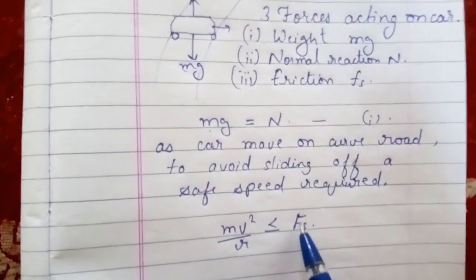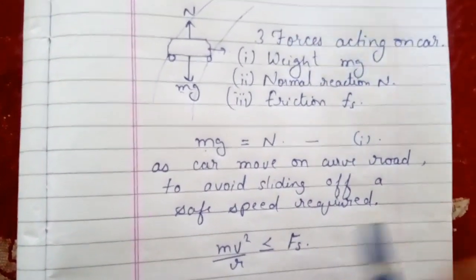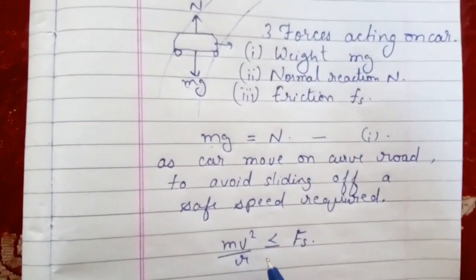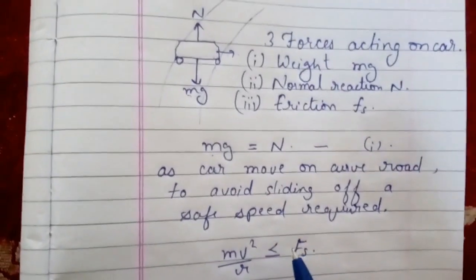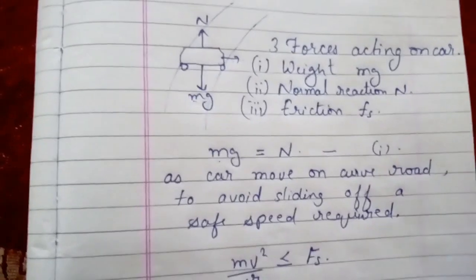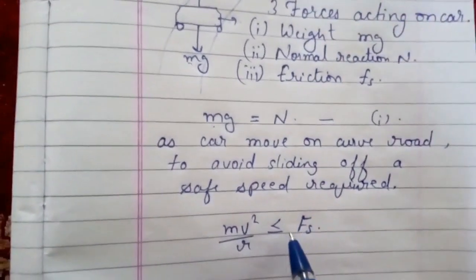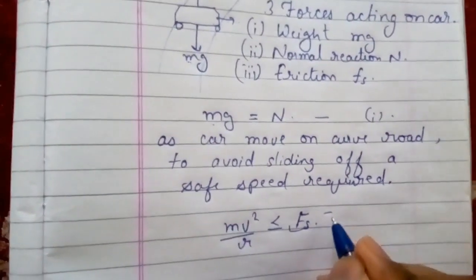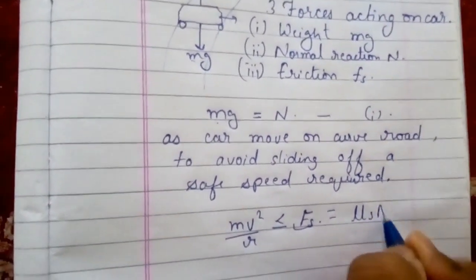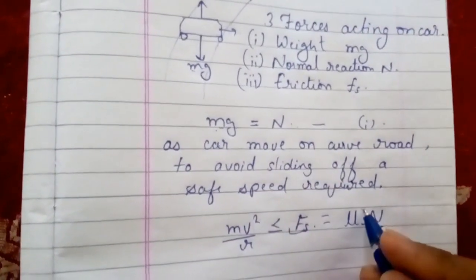Here we are discussing when the object is about to move, so the frictional force is static friction. The car is about to move, between when it is not moving and about to move. We discuss static friction which is mu_s N, where we have already written mg equals N.